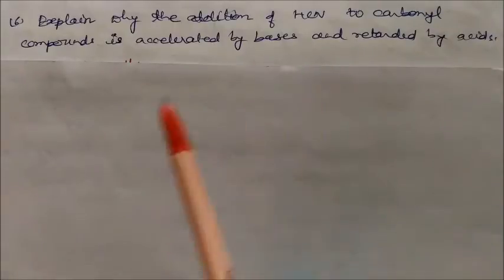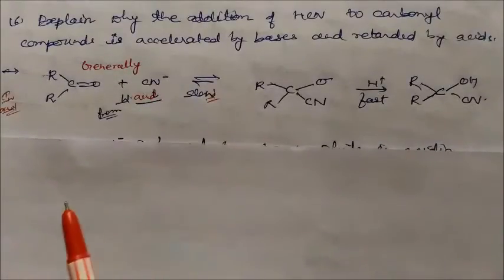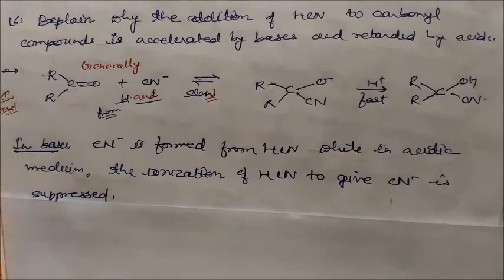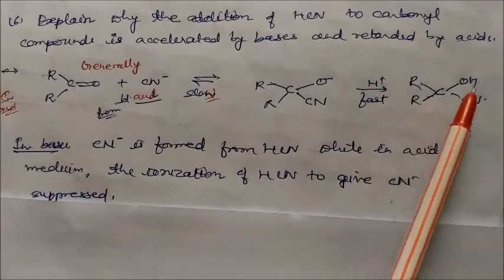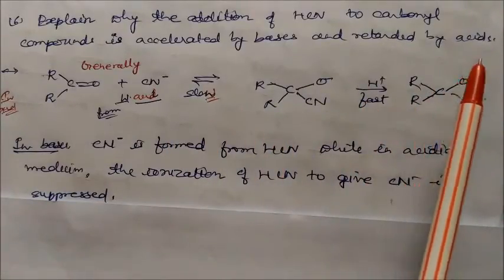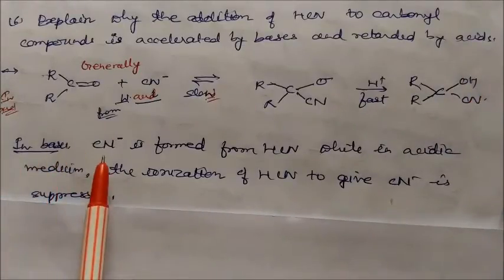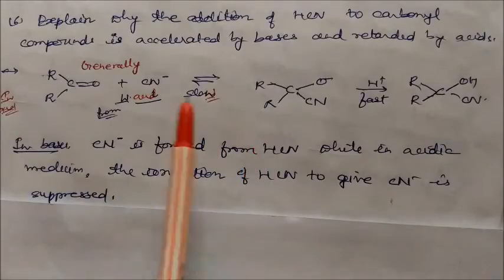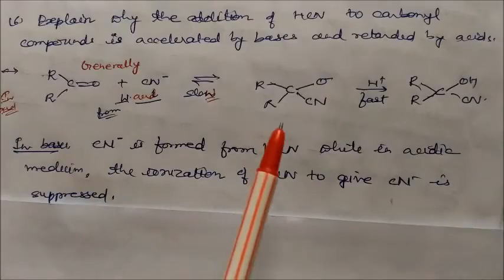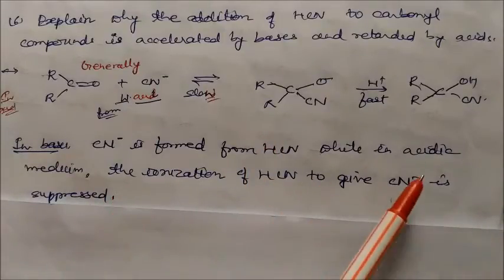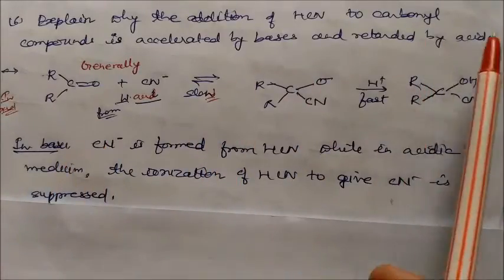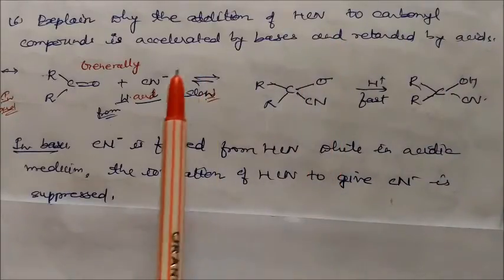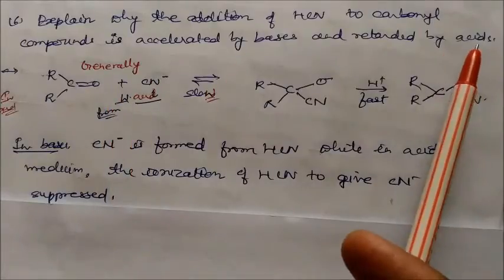Explain why the addition of HCN to carbonyl compounds is accelerated by bases and retarded by acids. The carbonyl compound reacts with CN⁻ in an addition reaction, initially slow then fast, giving the cyanohydrin. In the presence of a base, CN⁻ is formed directly from HCN, so it can directly attack the carbonyl carbon. In acidic medium, the ionization of HCN is suppressed due to the common ion effect of H⁺, so the addition of HCN is retarded.